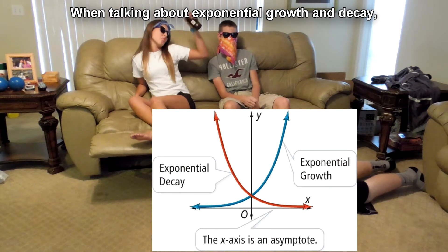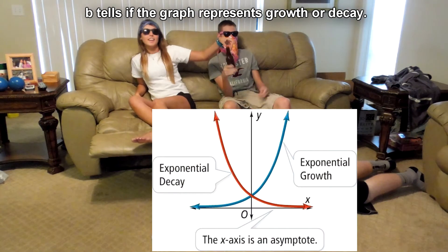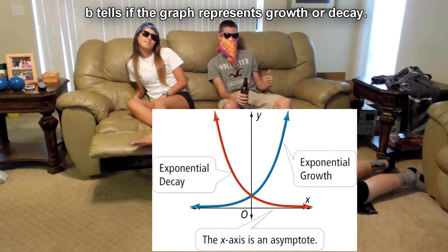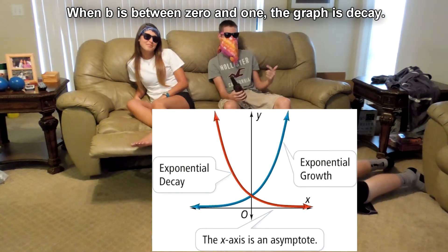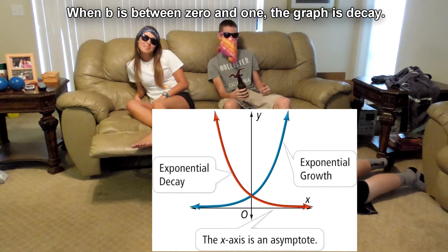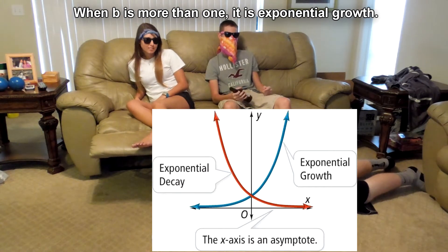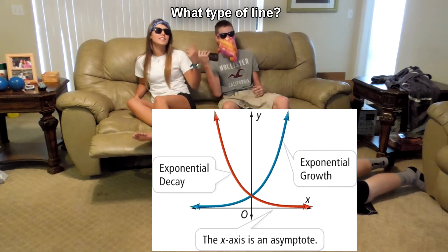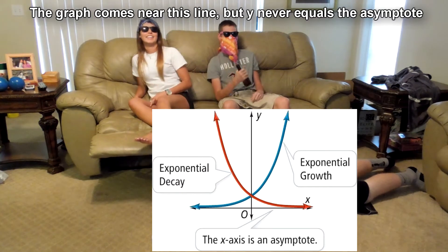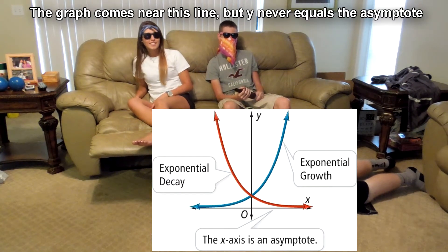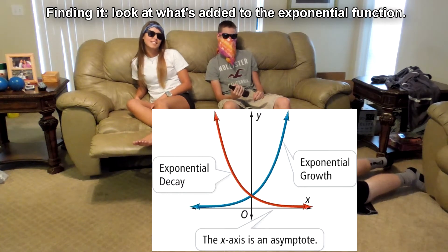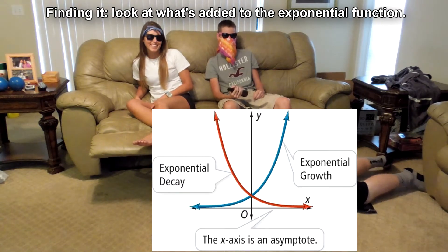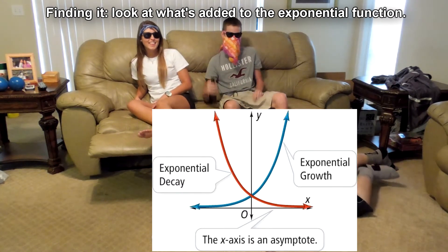We're talking about exponential growth and decay. We tell the program represents growth and decay. B is between 0 and 1, and the graph is decay. The B is greater than 1, exponential growth. An asymptote is a type of line. The graph comes near the line, but Y never equals the asymptote. Applying it, looking at what it's going to be — the exponential function.